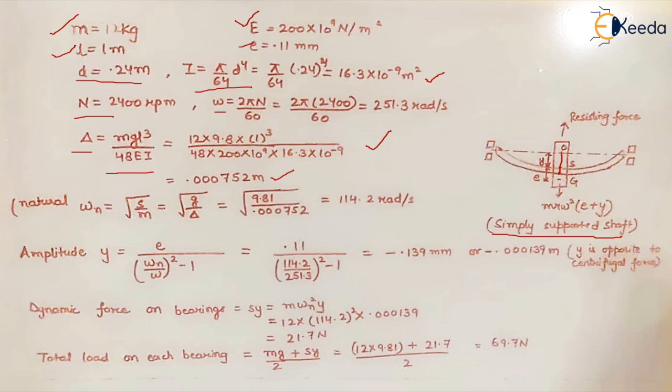Now we want to calculate the natural frequency of the system. The natural frequency is given by ωn = √(S/m), where S is the shaft stiffness, not the spring stiffness, upon mass which is the mass of the rotor.